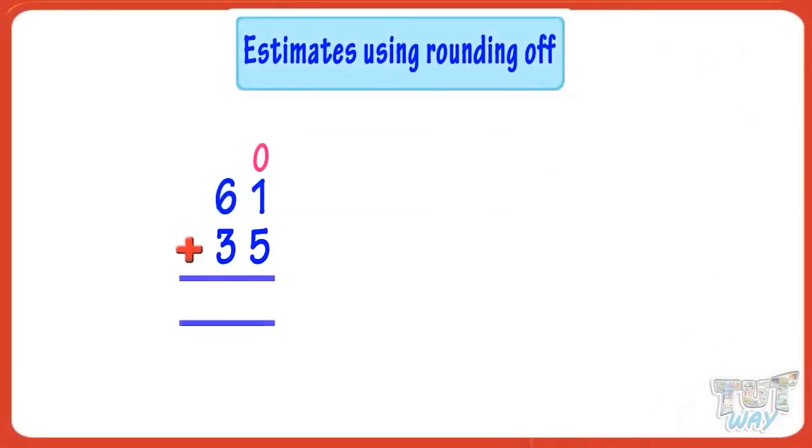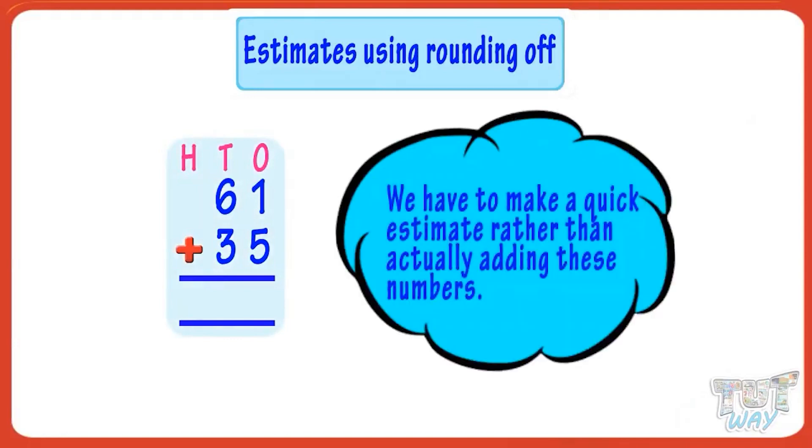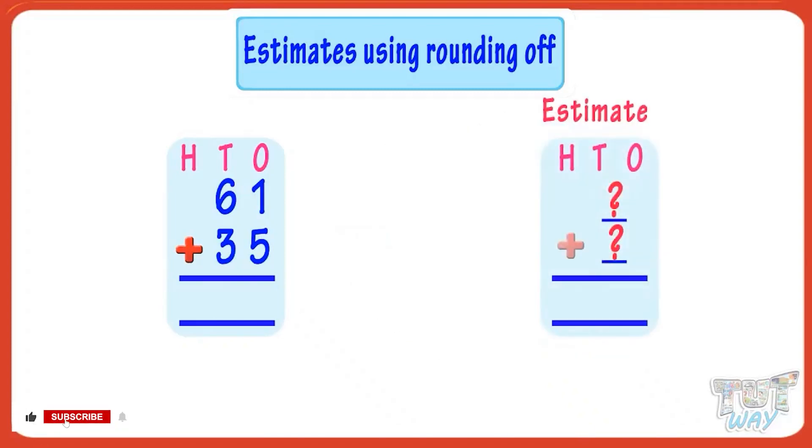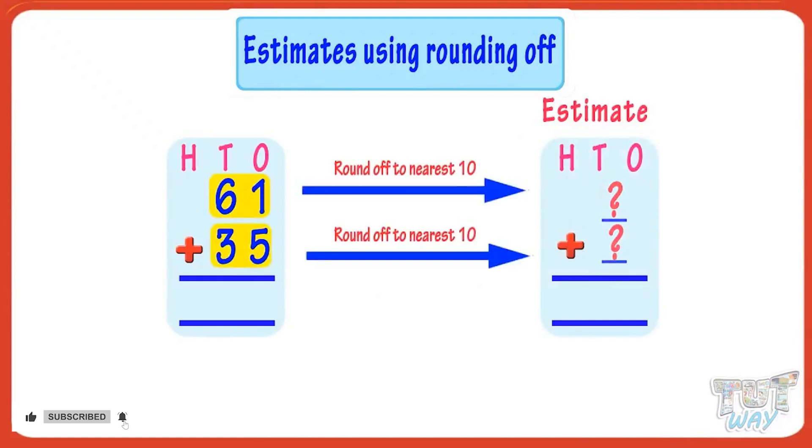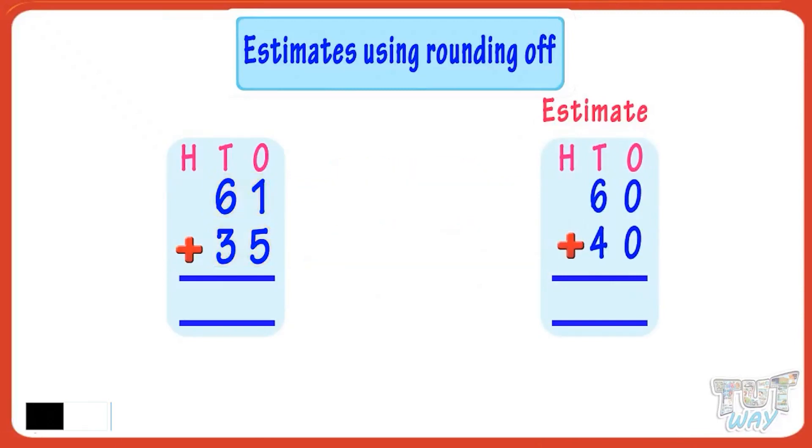We have to add 35 and 61. We have to make a quick estimate rather than actually adding these numbers. For that, we will round off 61 and 35 to the nearest 10 and then add them orally to get the estimate.